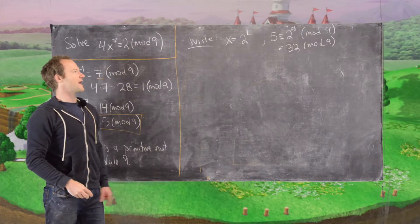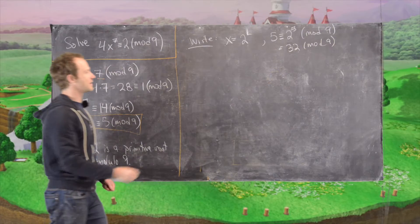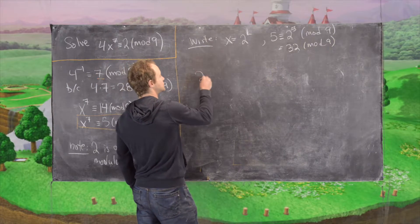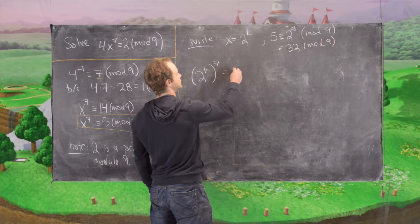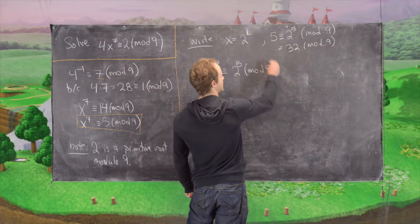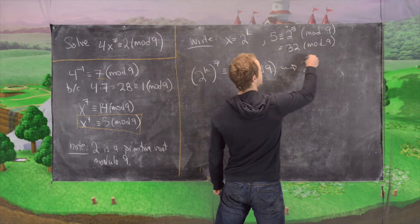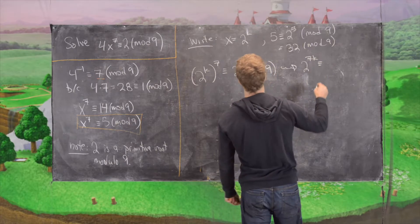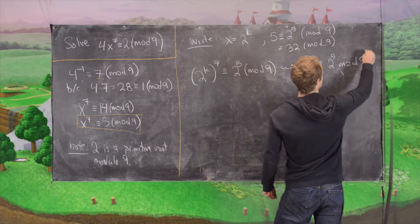So now that changes this orange boxed equation into the following. So we have 2 to the k to the 7th power is congruent to 2 to the 5 mod 9, which we can rewrite as 2 to the 7k is congruent to 2 to the 5 mod 9.